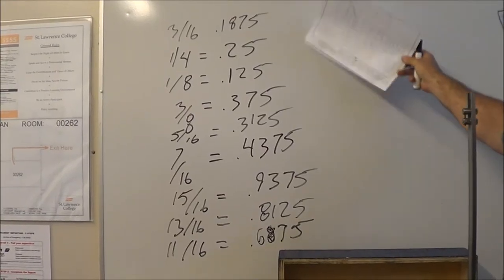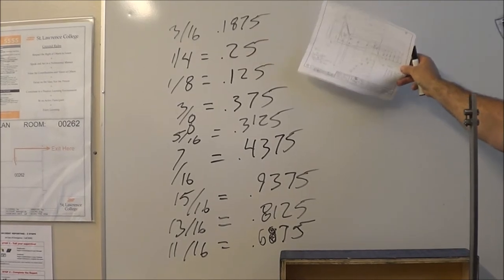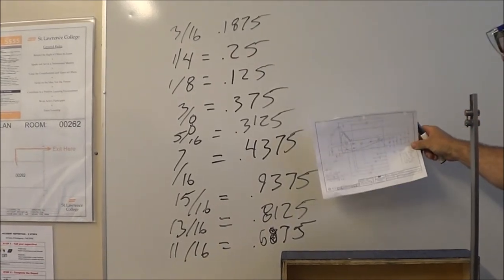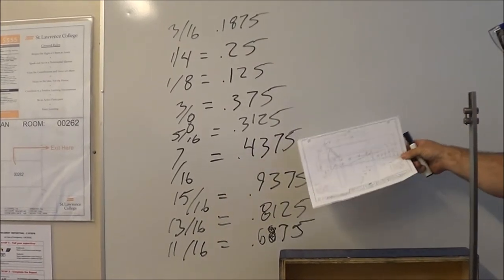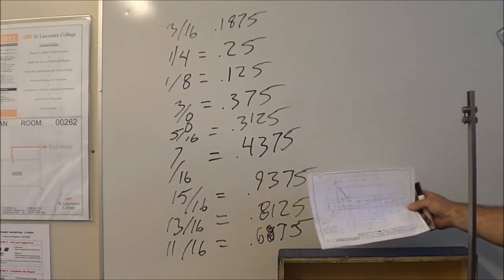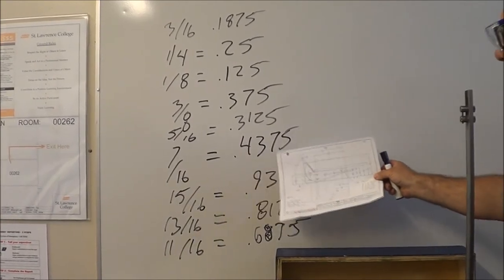All right, so we'll see that I've converted all of our fractions into decimal, but I didn't put the inches there because inch and seven sixteenths is going to be 1.4375.